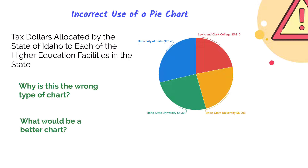The sum of the four amounts in the pie chart is meaningless. In this case, a bar chart would have been more appropriate because then you could see which university had higher spending per student than the others.